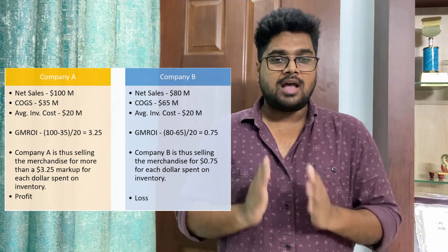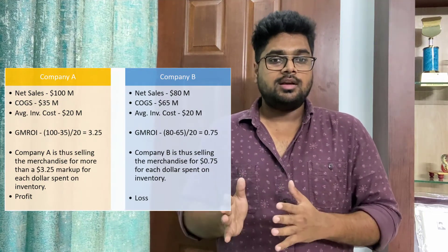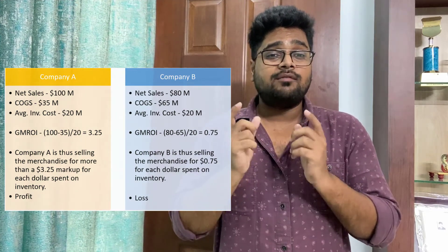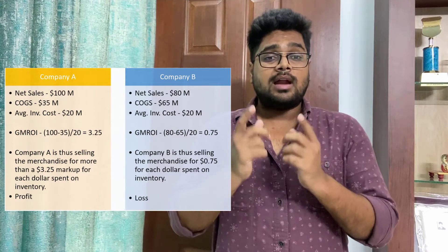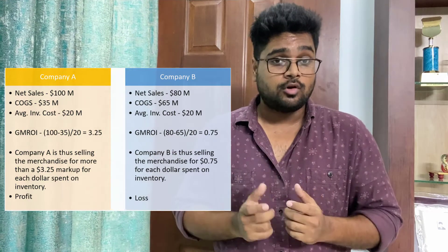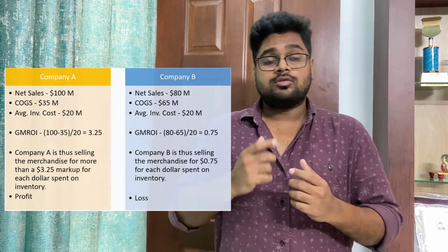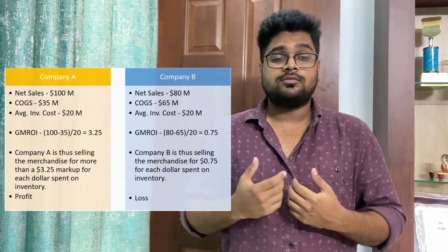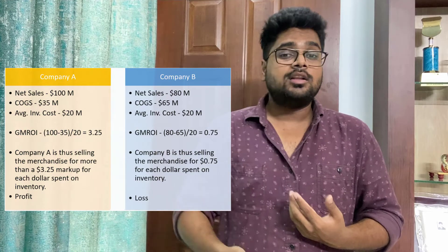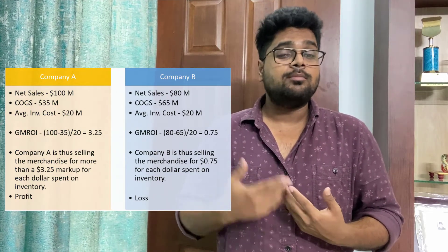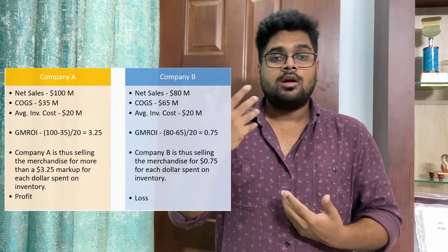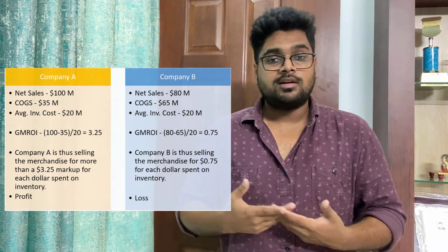This 3.25 basically means that for every one dollar the company is bearing as cost of inventory, it is earning $3.25. That's really important for a company to know — for every dollar they are spending they are earning $3.25, so they are in a profitable position. They can then decide how to mark up or mark down depending on how much inventory they are holding.